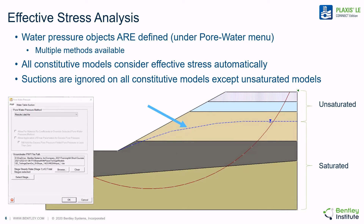An effective stress analysis is automatically enabled in the software if the user defines any pore water pressure conditions in the numerical model. The pore water pressure conditions are found under the pore water menu, and there are multiple methods available. Once the user defines a method of representing pore water pressure conditions, all constitutive models in the software consider effective stresses. Suctions are ignored on all constitutive models except the unsaturated soil models.